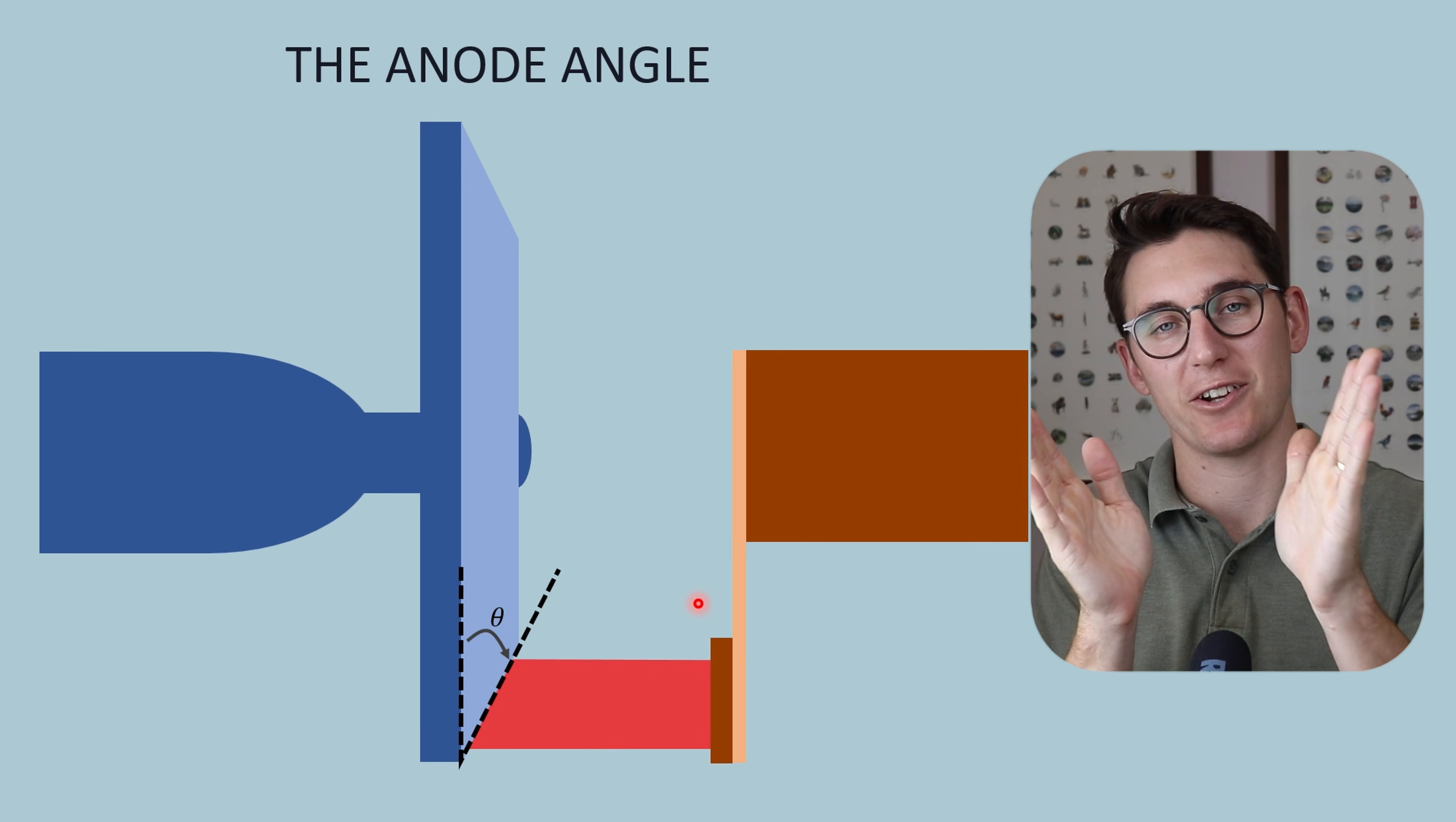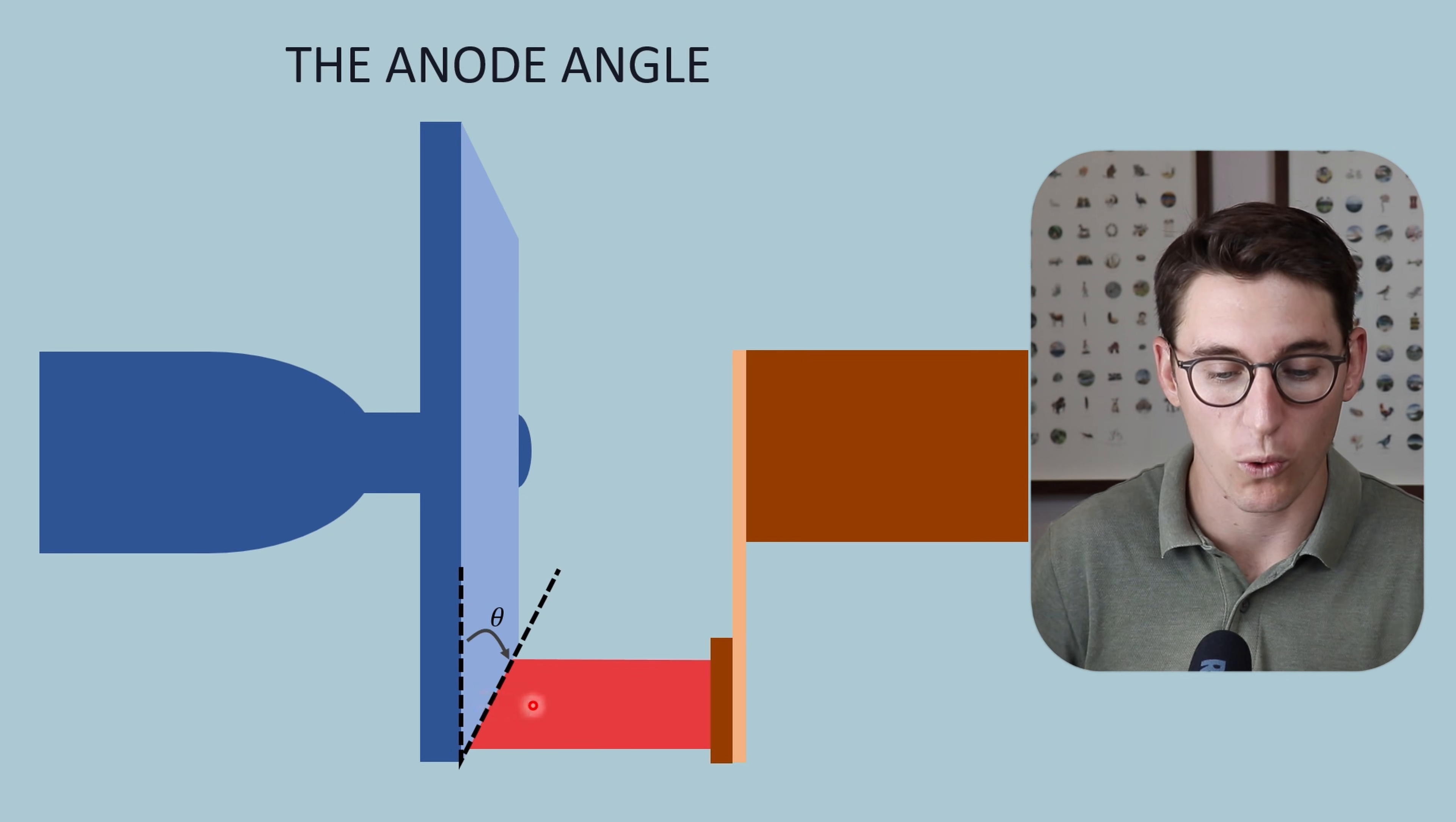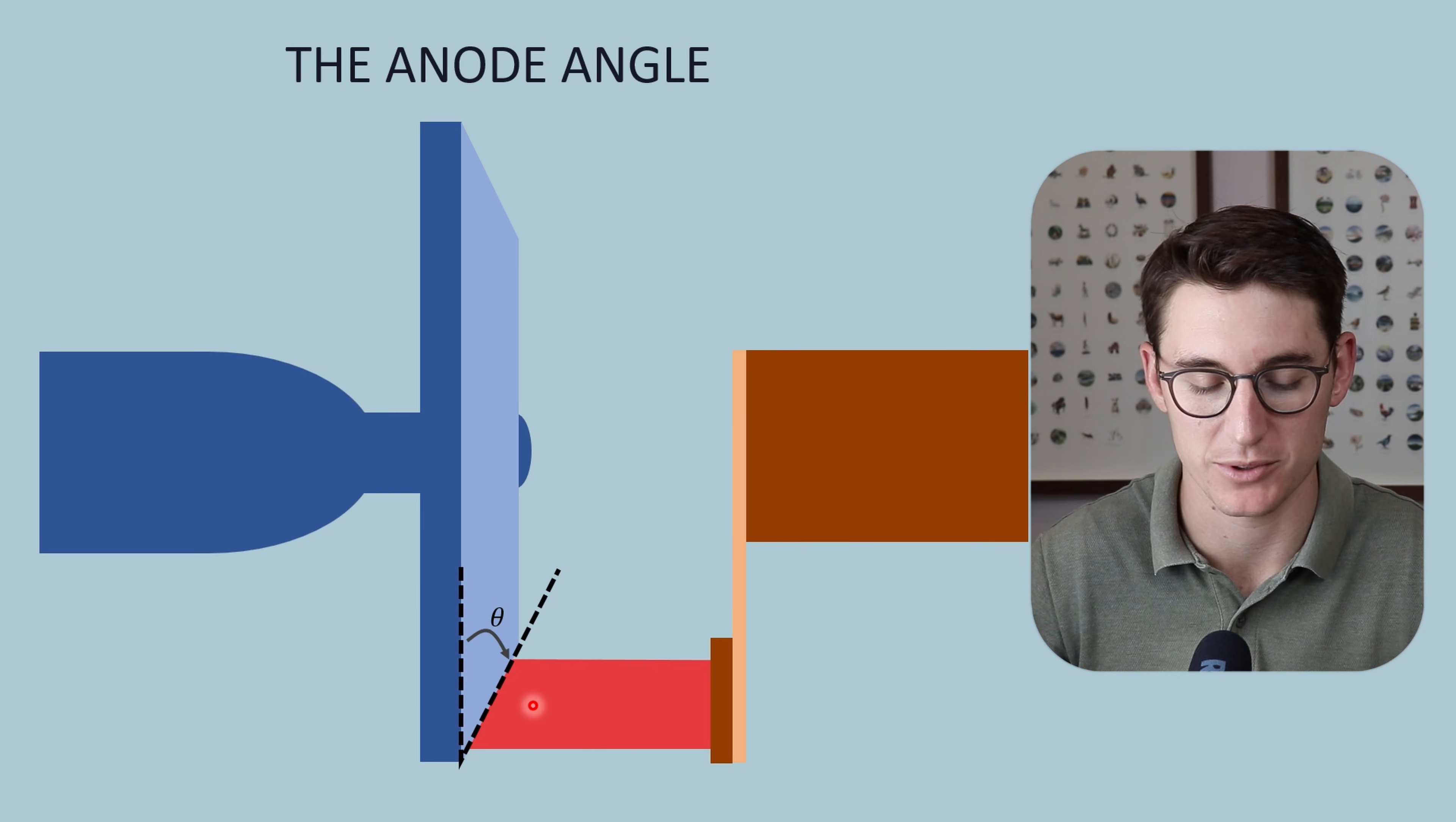The more we increase our anode angle, the larger our actual focal spot gets, the larger our field gets, and the larger our effective focal spot gets. All of which we're going to look at when we examine the line focus principle and x-ray beam geometry.